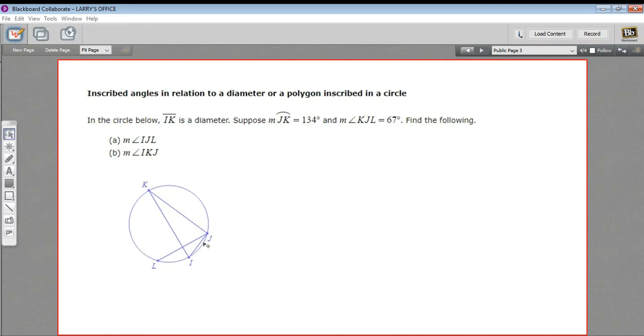In this problem, we are working with inscribed angles and the lengths of arcs that they intercept. We're being told that IK is a diameter of the circle, so let me just draw that in, highlight that. So this is a diameter.